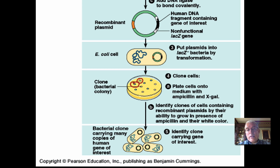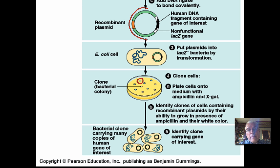The blue colonies are not the ones we're interested in, because the blue colonies have taken up a plasmid that simply reattached to itself — the LAC-Z gene re-annealed without the gene of interest. This restores the plasmid to what it was before. If a bacterial cell takes up this plasmid without the gene of interest, it will resist ampicillin and grow, but it will also digest X-gal and produce the blue metabolite — so those colonies will be blue. The white colonies, on the other hand, are the ones we're interested in. White colonies have taken up the plasmid with a broken LAC-Z gene but still have ampicillin resistance, so they can grow but don't turn blue. Then we grow these bacteria by the trillions to produce lots and lots of copies of this gene of interest.